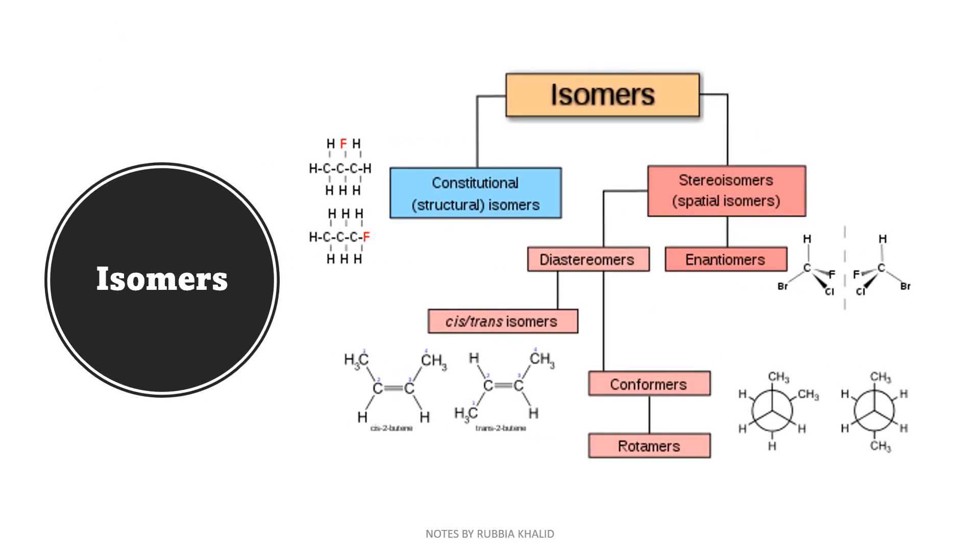Next we have isomers. Isomers can be divided into two groups: either constitutional isomers, also known as structural isomers, and stereoisomers. Another name for stereoisomer is spatial isomer. Spatial isomer is then divided into two further groups: diastereomers, which can be cis or trans isomer, or conformers or rotamers. Another type of stereoisomer is enantiomers.